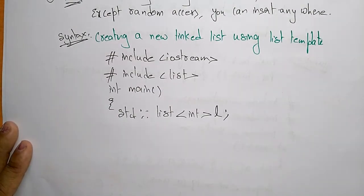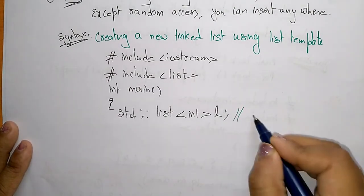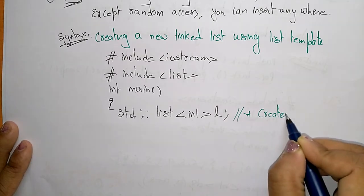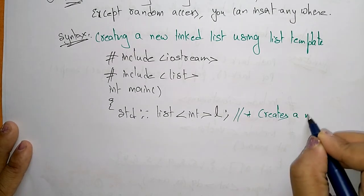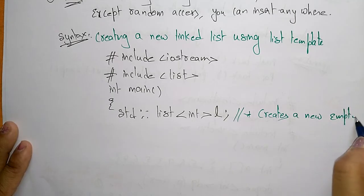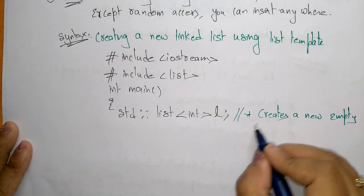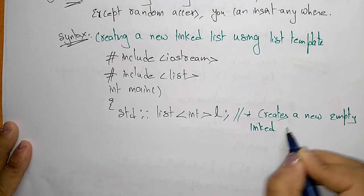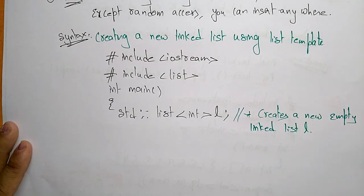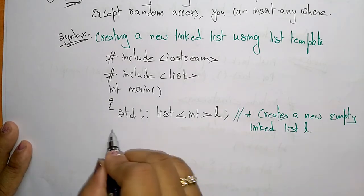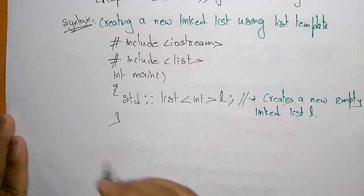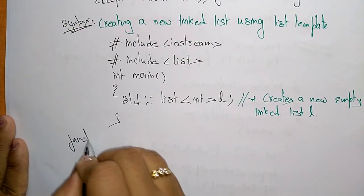Here, std::list<int> l creates a new empty linked list where l is the name of the list.